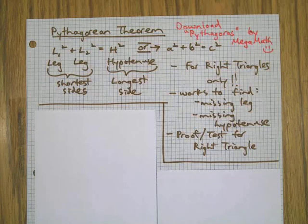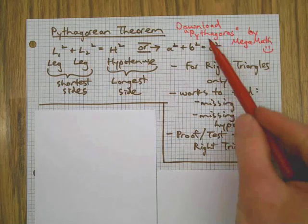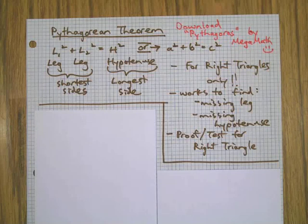All right, today is the day to get a quick crash course on the Pythagorean Theorem. Pythagoras was a Greek philosopher that lived in the 6th century BC. You can learn all about him if you download my song, Pythagoras, by Megamath.